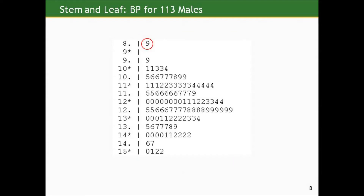For example, in the first row where the stem says '8 dot' and the leaf says '9', that 9 represents a single observation whose value is 89 millimeters of mercury. To get the value, you concatenate the stem and leaf. Additionally, you can see that there are five persons in this sample of 113 who have blood pressure measurements of 116 — that's why in the stem that starts '11 dot', there are five leaves of value 6.